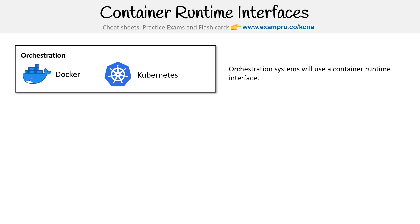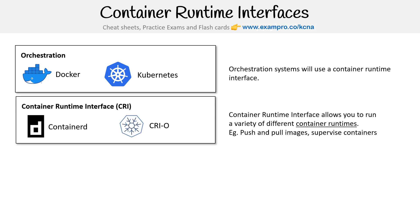The idea here is that Kubernetes would be utilizing something like either containerd, or it would be using something like CRI. When we talk about container runtime interface, that's why there was never an icon earlier in the course — because the runtime interface is one of these two.